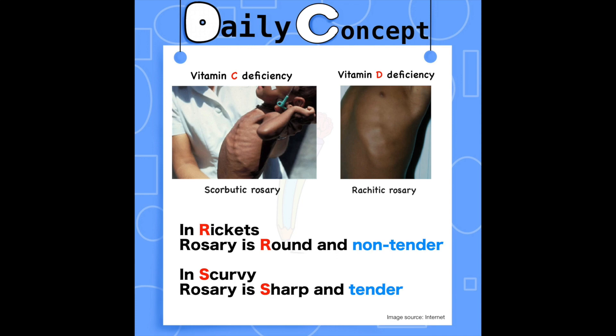Here this image will help you remember the difference between rachitic rosary and scorbutic rosary. Rosary is round and non-tender in rickets. So, R for rickets and R for round. Now, rosary is sharp and tender in scurvy. So, S for scurvy and S for sharp.